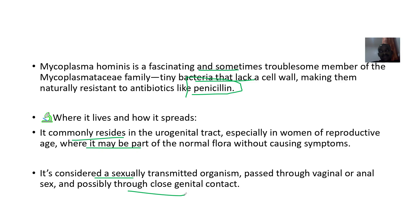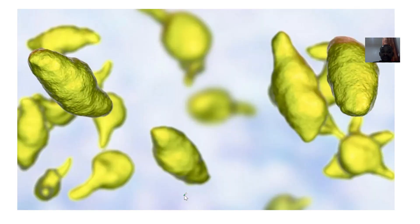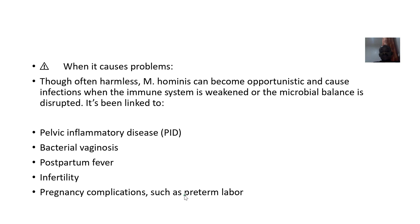It's a normal organism that's supposed to be there, but it can cause problems if your immune system goes down or if its growth is not regulated. It is essentially opportunistic — waiting for an opportunity to strike, mostly when your immune system is weak.